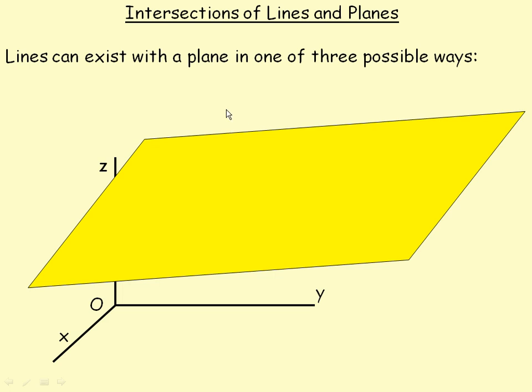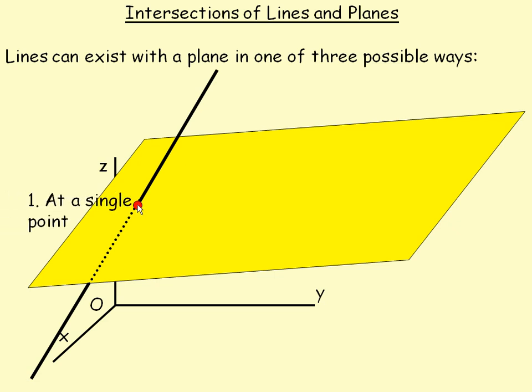Lines can exist with a plane in one of three possible ways. First, the line could come down and, as long as the line is not parallel to the plane, it's going to intersect in a unique point somewhere. This red point represents the single, unique intersection point. So as long as the line is not parallel to the plane, it has to intersect the plane in one single point.